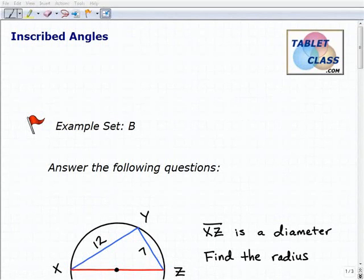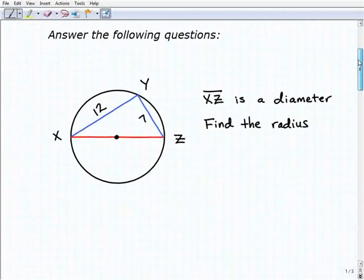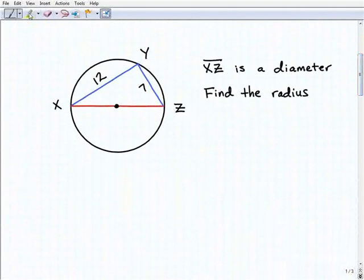Hello, welcome to the video on inscribed angles. This is our second example set, example set B. I hope you had a chance to watch the lesson and the previous example set. I think the best way to learn with our system is to go through each example set in order. But let's get right to it. We're going to answer the following questions. We're told that XZ is the diameter, and we also see that we have an inscribed angle.